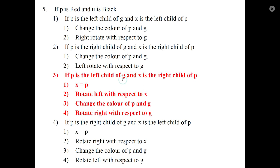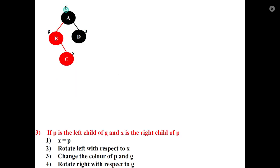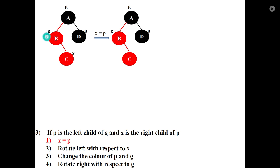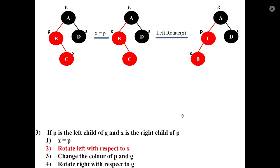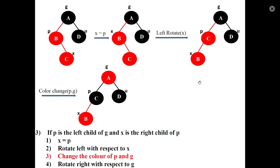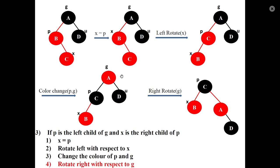Third case: new node is in the left-right position — grandparent's left child is parent, parent's right child is X. First operation: set X equal to P. Perform a left rotation with respect to X (with respect to B). This gives us new X. Then change the color of parent and grandparent, and perform a right rotation with respect to the grandparent.